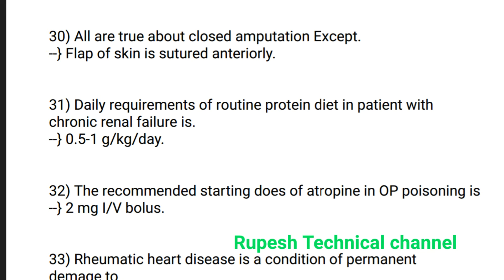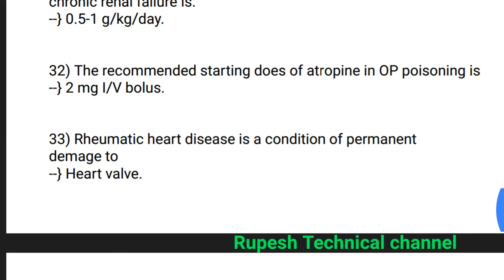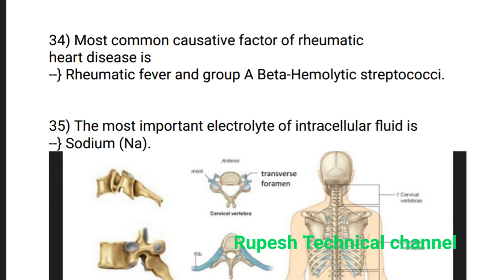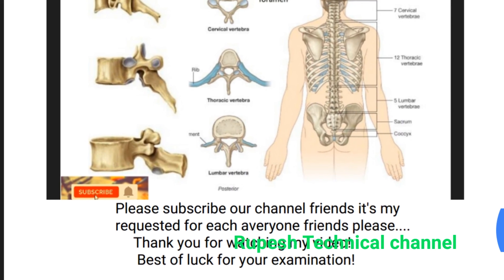Question number 31: Daily requirement of protein diet in a patient with chronic renal failure is 0.5 to 1 gram per kg per day. Question number 32: The recommended starting dose of atropine in OP poisoning is 2 mg IV bolus. Question number 33: Rheumatic heart disease is a condition of permanent damage to heart valves. Question number 34: The most common causative factor of rheumatic heart disease is rheumatic fever and Group A beta-hemolytic streptococcus.